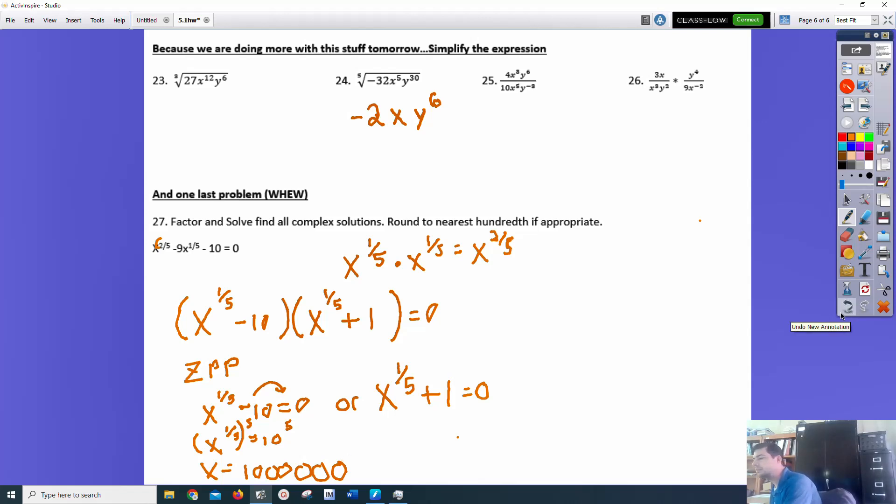Oh, yeah, it's just the number of exponents, number of zeros. There you go. We got something. 100,000.